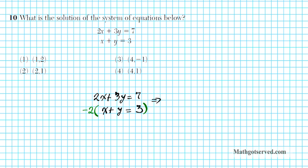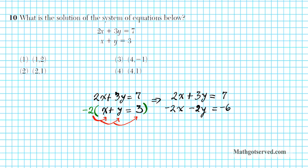We have 2x plus 3y equals 7. Distributing negative 2 to every single term of the second equation — do not forget to distribute to all terms — gives us negative 2x minus 2y equals negative 6. We have created opposites in the x column. Adding both equations together eliminates x, and we're left with y equals positive 1. So we can eliminate options 3 and 1 — it has to be option 2 or 4.